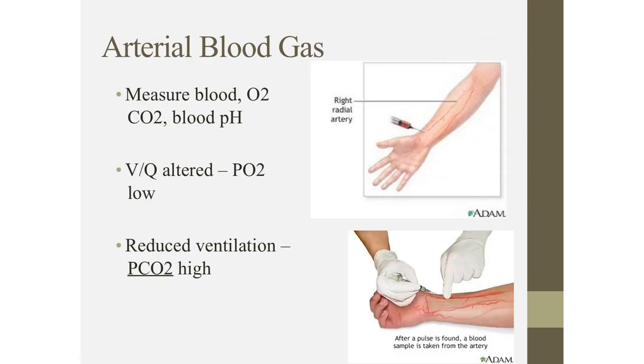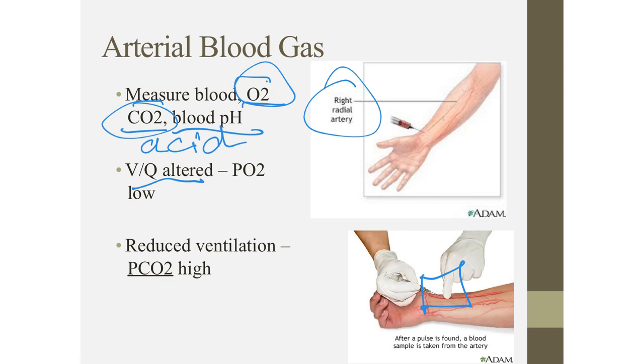An easy test is arterial blood gas. Arterial blood gas is a blood sample. Here we have the right radial artery that's being sampled from. We take a blood sample and you can measure oxygen, CO2, and pH. pH is important because CO2 is an acid. So if we see a pH that's altered, that can tell us a lot about CO2 and oxygen levels. This gives us the ability to look at VQ alterations by putting actual numbers along with CO2 and O2 so that we can look at the VQ ratio.